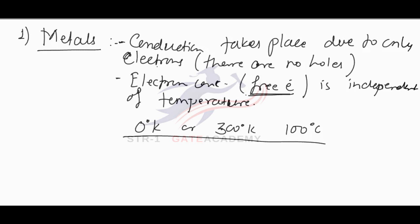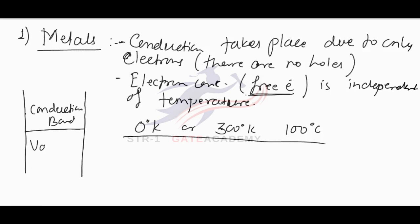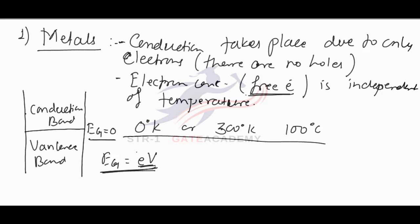At all temperatures the electron concentration will be the same. So in the case of metals, to make any electron free, we need not supply any energy. That is, in the case of metals, the conduction band and valence band are not separated by any forbidden energy band. The forbidden energy band gap EG is equal to 0 eV for metals, meaning we need not supply any energy to the metal in order to obtain conduction.